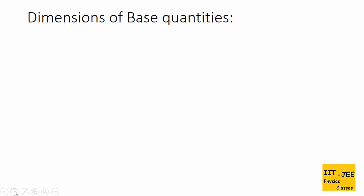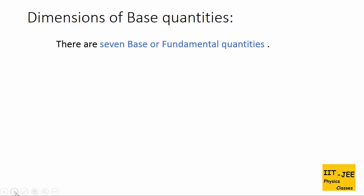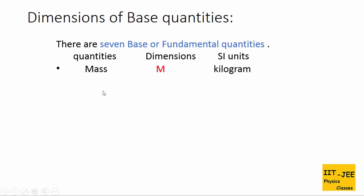So what are dimensions of base quantities? There are seven base or fundamental quantities. The first base quantity is mass. Its SI unit is kilogram, and there is a special symbol which represents its dimension — for mass, it is capital M.